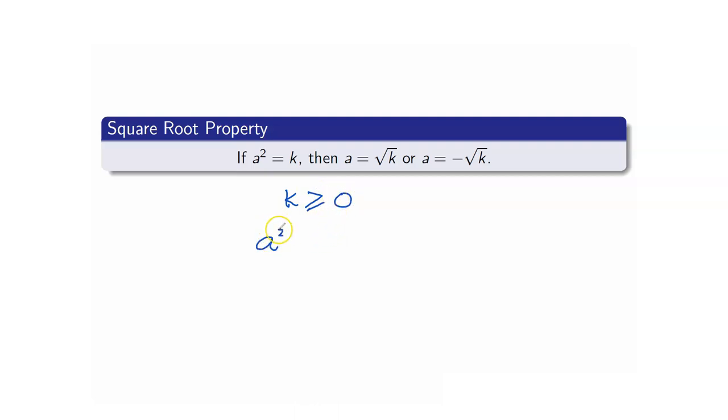Because if a squared is equal to a negative number, let's say negative 5, cannot happen. The square of a number is always positive or 0.